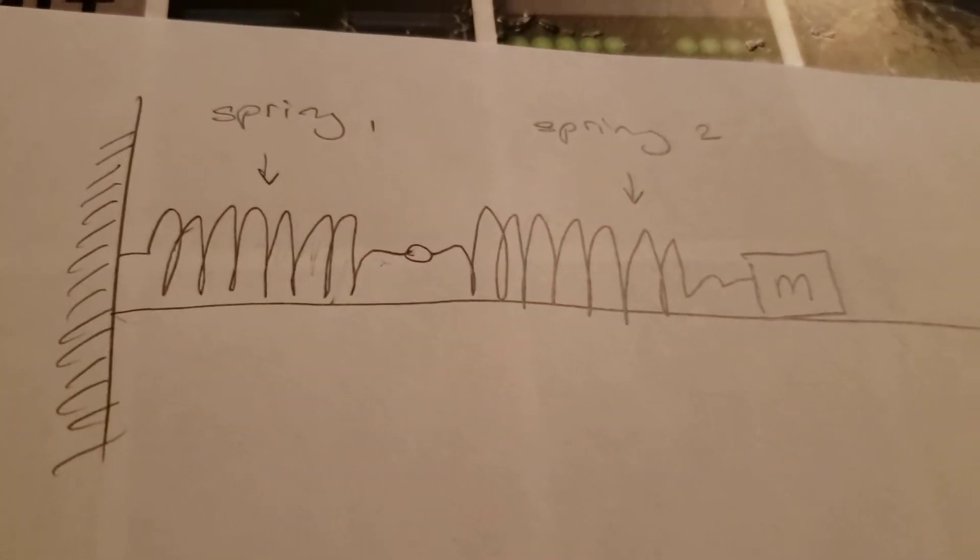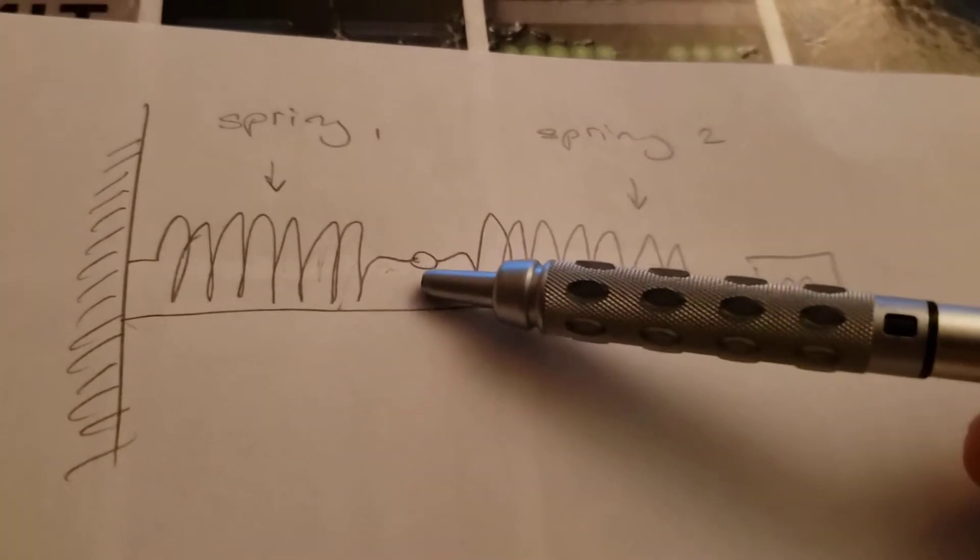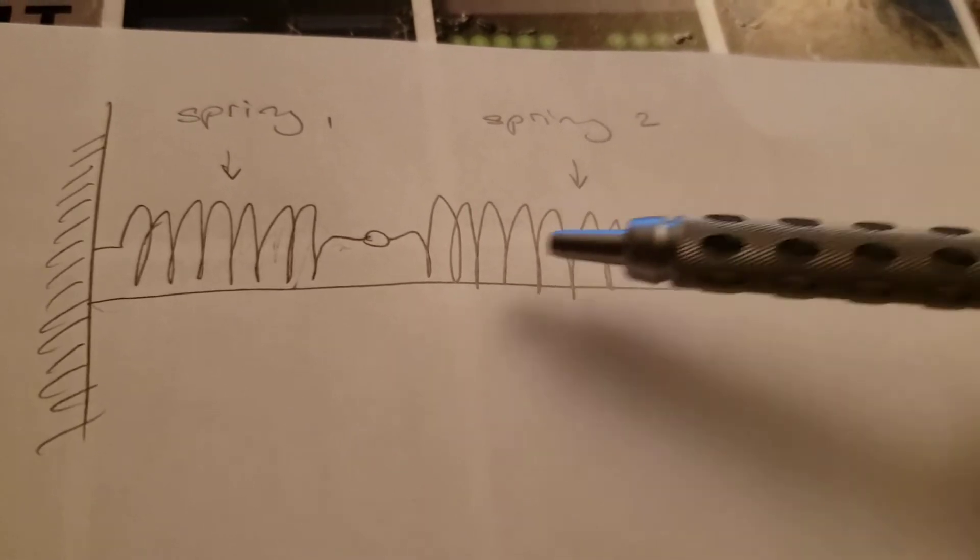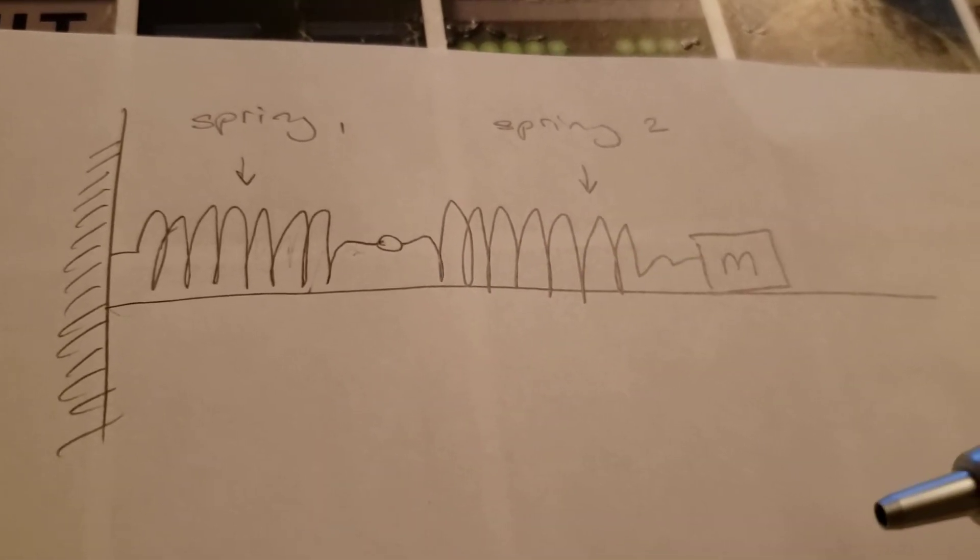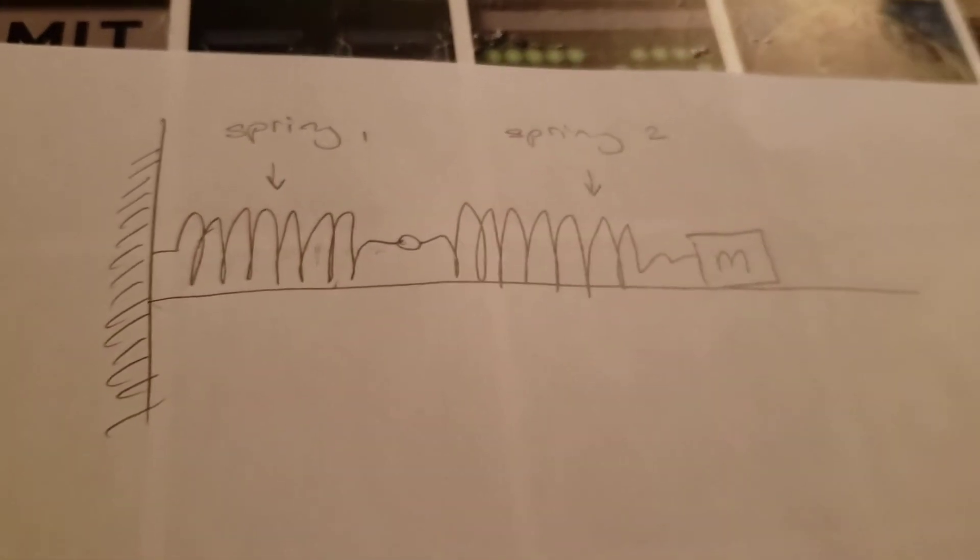To make that more clear, I drew a picture right here in which I labeled the connection point between the springs with this dot. So this dot is kind of the point where the first spring ends and the second spring starts. And as you can see, they're attached lengthwise to each other. And then this is the first spring, and this is the second spring.